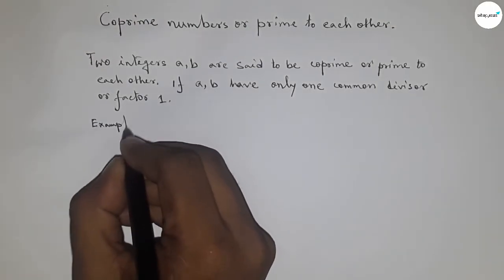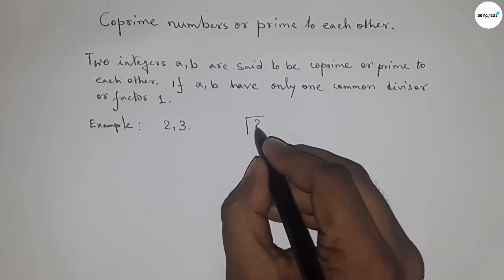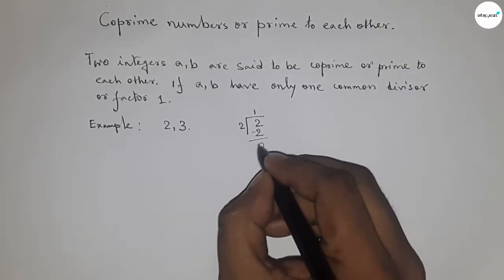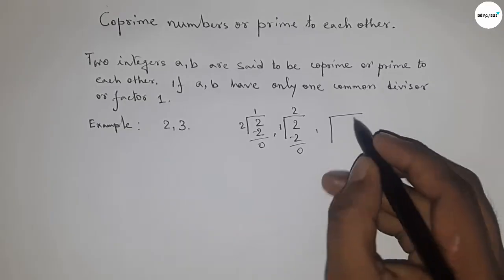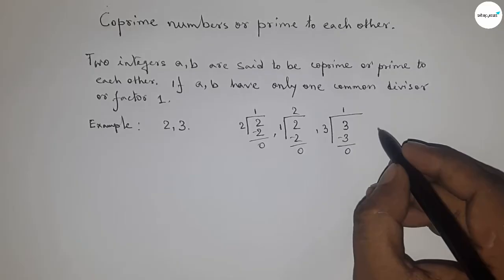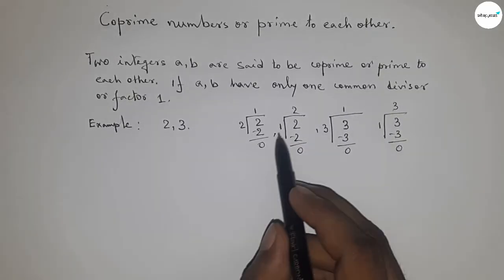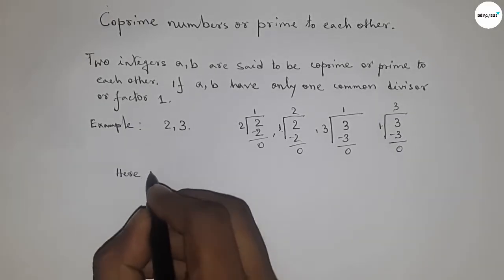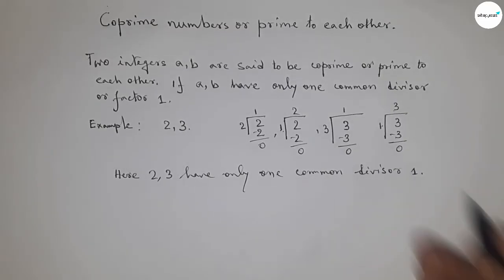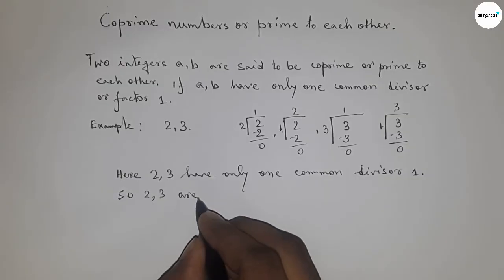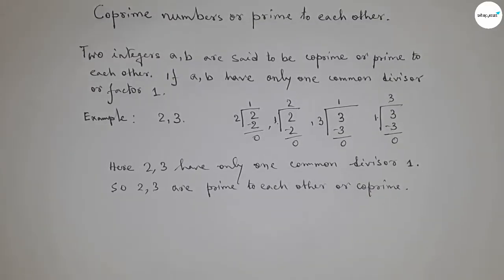Let's explain this by taking an example. Take 2 and 3. Now, 2 can be divided by 2 itself and also by 1. And 3 can be divided by 3 itself and also by 1. So from both, we got only one common divisor, which is 1. So 2 and 3 have only one common divisor, satisfying the definition of co-prime. Therefore 2 and 3 are co-prime integers.